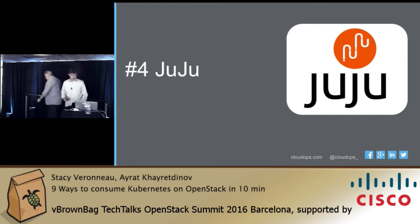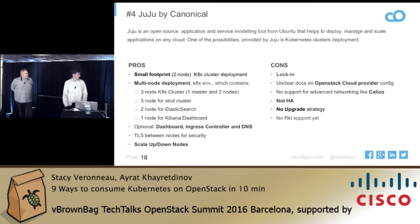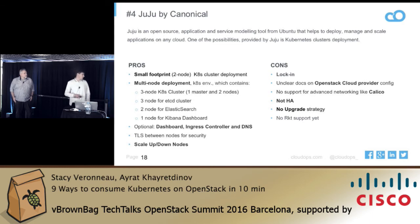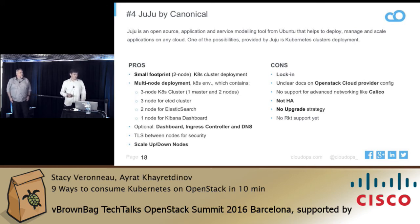I'll cover two options from vendors and two options from OpenStack services. Juju by Canonical is an application modeling tool from Canonical — you can deploy any application using Juju Charms. One of those charms is a Kubernetes cluster, deployable as a small footprint or multi-node. You get out of the box: dashboard, ingress controller, and DNS. You can scale up and scale down your cluster. The downside: it's a very opinionated way of deploying Kubernetes. If you're a Canonical customer, it's probably something you should look at first, and you can get a per-node subscription.